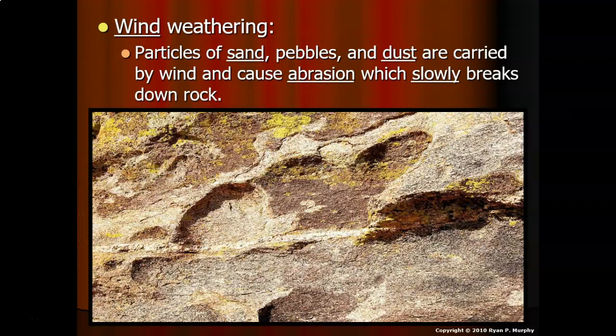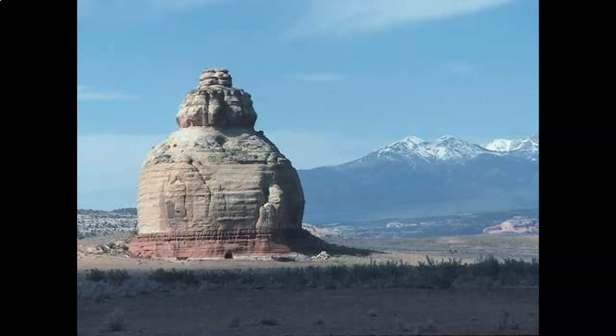Our last form of mechanical weathering is wind weathering. Particles of sand, pebbles, or dust get carried by the wind and cause abrasion — also known as friction — which slowly breaks down rock. Here's a dramatic example where sand and pebbles from the dry ground have been picked up by the wind and blasted what used to be a much larger rock, shaping it in a dramatic fashion.